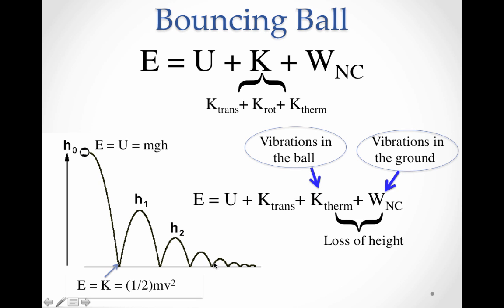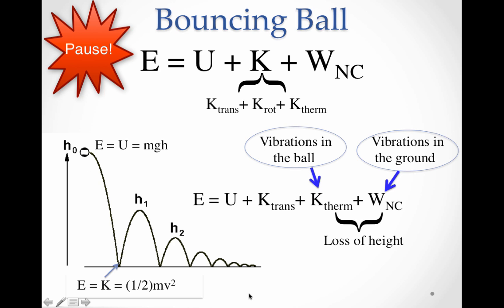This process just repeats itself. It kind of dies down with a curve, because since the ball isn't hitting as hard, there's not as much going into thermal energy or into heating. We're not losing as much height each time because we're not vibrating the ball or the ground as much each subsequent bounce since it's not as violent as it was previously. This explains, using our model for non-conservative systems, why a ball bounces like it does.